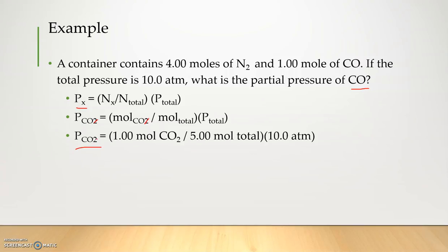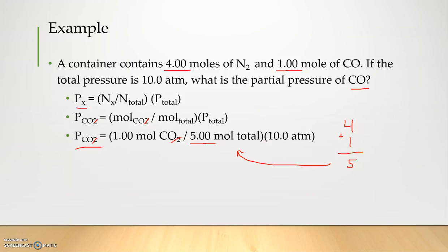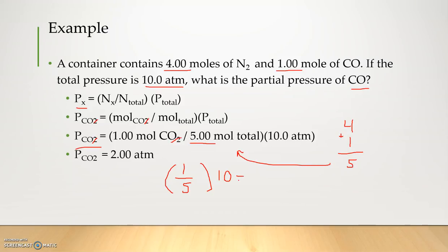What we're trying to find equals one mole of carbon monoxide divided by five moles total. We get five from the four moles of nitrogen plus the one mole of carbon monoxide — four plus one equals five. That's where we get the five moles total, times the total pressure of 10 atm. So if we solve, we have one over five times ten, which equals two. So the partial pressure of carbon monoxide is 2 atm.